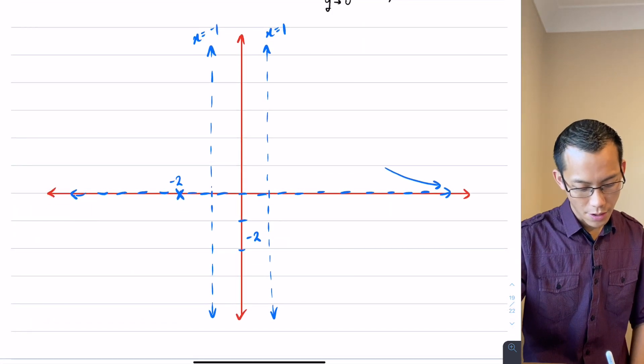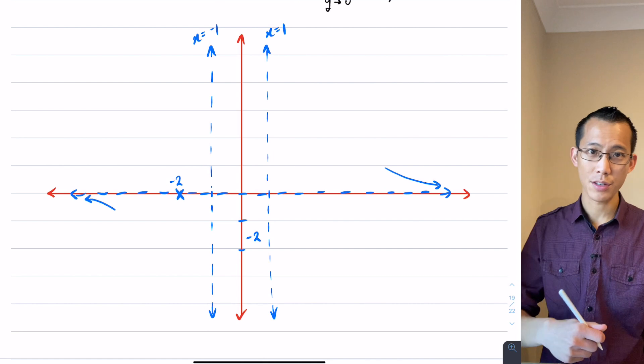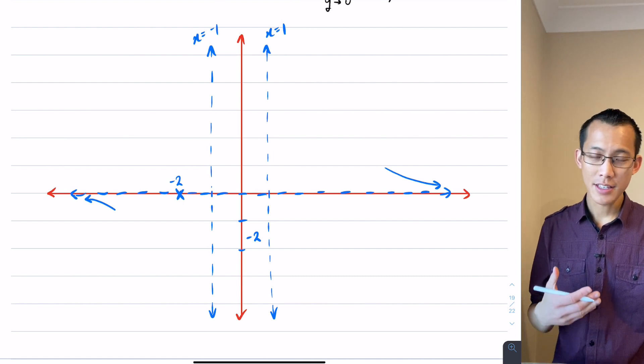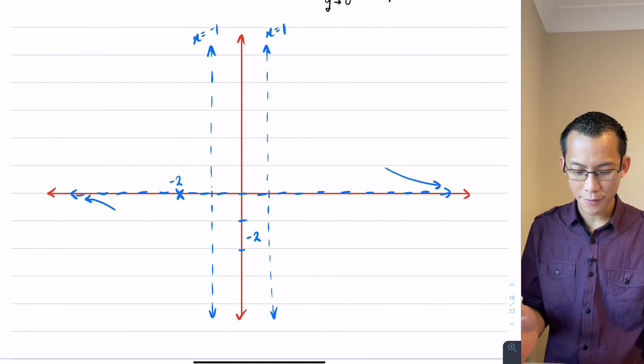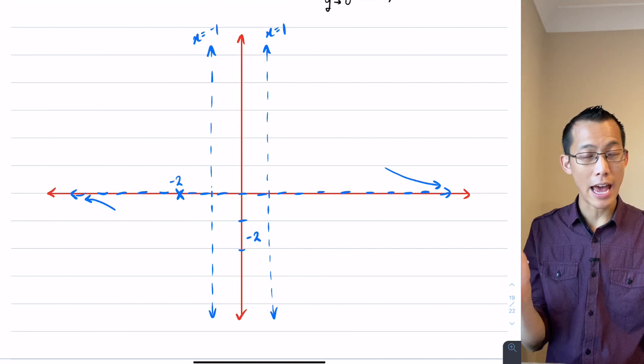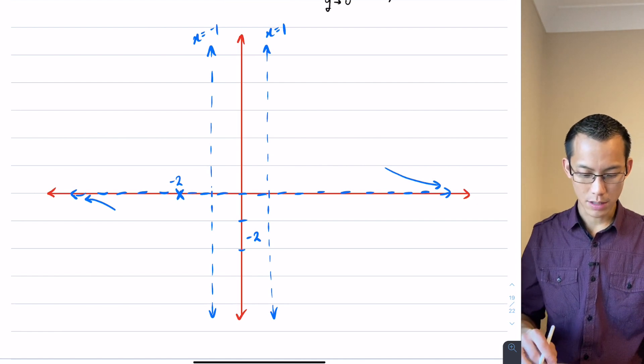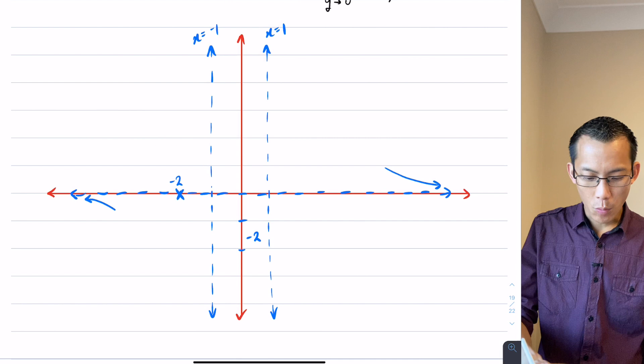Okay, now this immediately actually tells me some information around this that I can work out. For example, by seeing what happens at the asymptotes that are vertical, right? What happens when I get close to those?